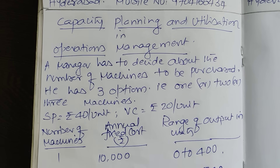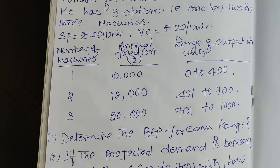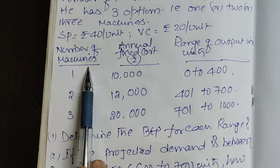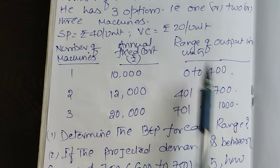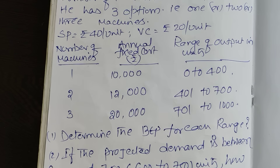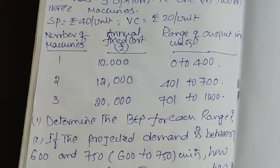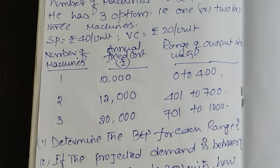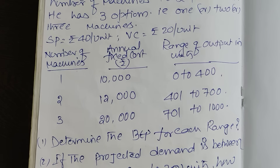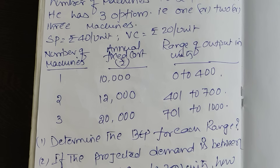Additional information given: selling price of the product is Rs.40 per unit, variable cost is Rs.20 per unit. The number of machines, annual fixed cost, and range of output are also given. When the manager decides to purchase one machine, fixed cost is Rs.10,000 and he can satisfy a demand up to 400 units.